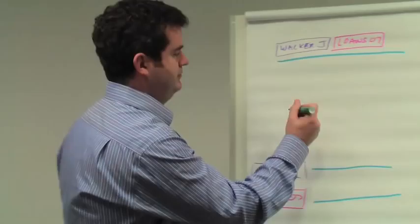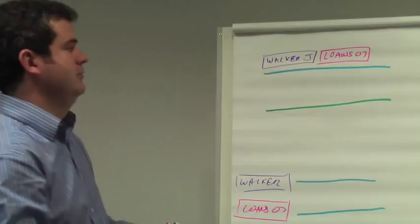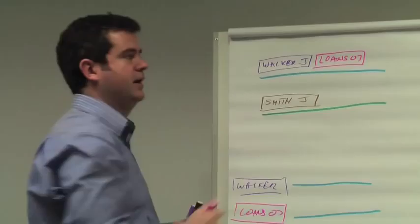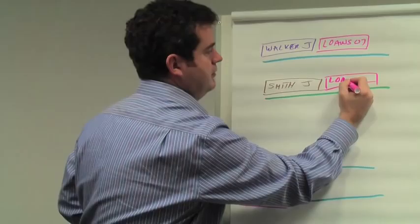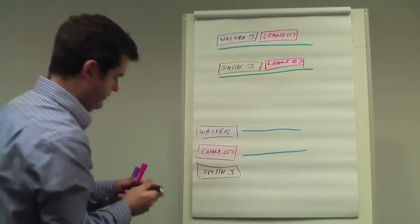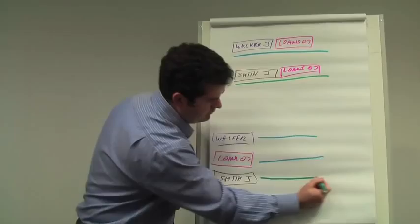Now let's say we have another conversation, this time with a completely different client, with Jane Smith, but that might also have come under this category. So we can label it Loans 07. So now down here we'll have our label for Smith, Jane. And Jane will appear with this label, but perhaps more importantly, she will also exist with this label.